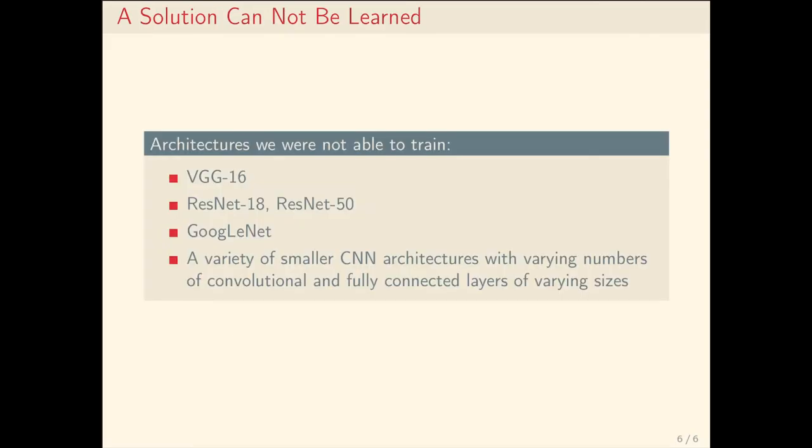Despite knowing that a solution exists, we were not able to train commonly used CNN architectures like VGG, ResNet, GoogleNet and a variety of smaller CNN architectures to classify this dataset with accuracies above chance,